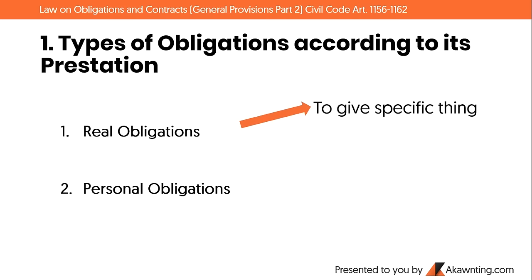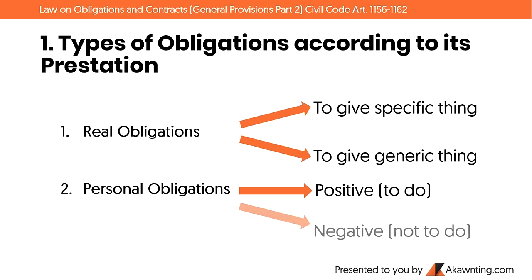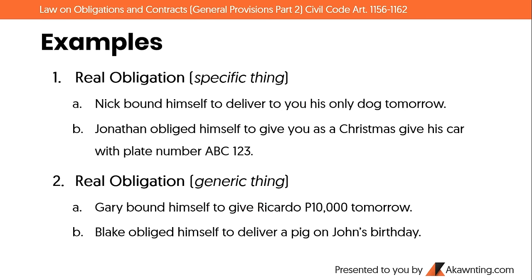Real obligations are further categorized into two: obligation to give a specific thing, and obligation to give a generic thing. Personal obligations are likewise divided: positive, which is obligation to do, and negative, which is obligation not to do.